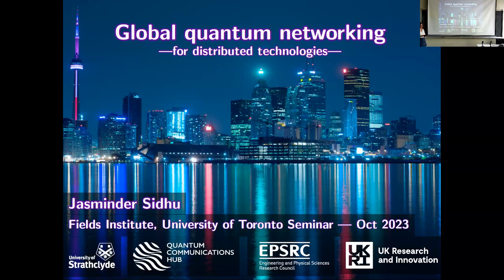Today we have Jas, who is a postdoc at the University of Strathclyde, part of the UK Quantum Communications Hub. His work in finite resource quantum information will help establish fundamental precision bounds for multi-parameter estimation theory and design practical receivers for quantum detection. More recently, he's worked on satellite-based quantum communications to model key rates, and he has proposed repeater architectures for entanglement distribution. It's my pleasure to introduce Jas.